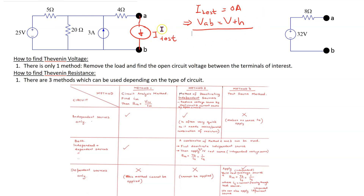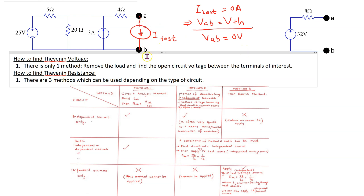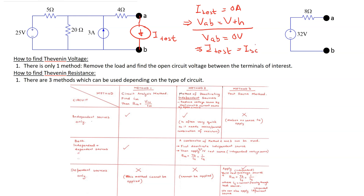Similarly, we run a DC sweep for the magnitude of ITEST and find the value when VAB is equal to 0V. When ITEST has such a magnitude that the voltage between the terminals of interest is 0V, this corresponds to a short circuit between the terminals, and then the test source magnitude gives us I short circuit. Once we find V Thevenin and I short circuit, we can find R Thevenin using this relationship.